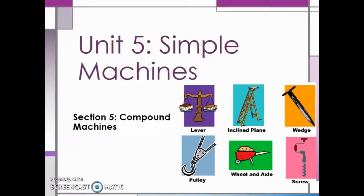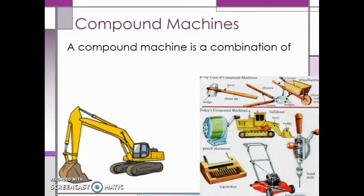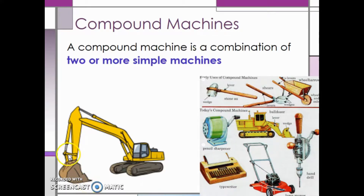The purpose of this section is to familiarize you with compound machines. A compound machine is a combination of two or more simple machines. An excavator is an example of a compound machine: on the bucket we have wedges, the arm of the machine is a lever, and on some small excavators you might have wheels and axles instead of a track.